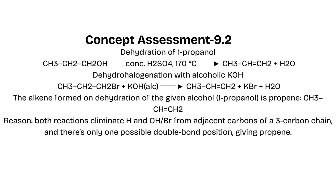Concept Assessment 9.2: Dehydration of 1-propanol, and dehydrohalogenation with alcoholic KOH. The alkene formed on dehydration of the given alcohol, 1-propanol, is propene. Reason: Both reactions eliminate H and OH or Br from adjacent carbons of a three-carbon chain, and there is only one possible double bond position, giving propene.